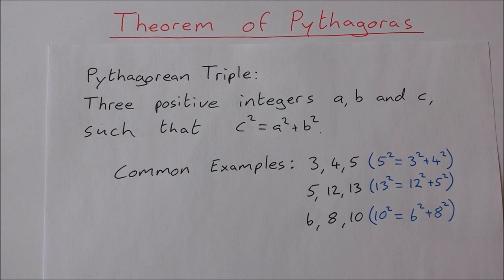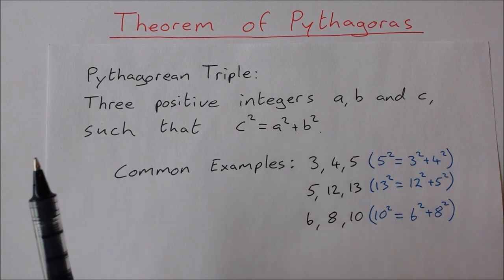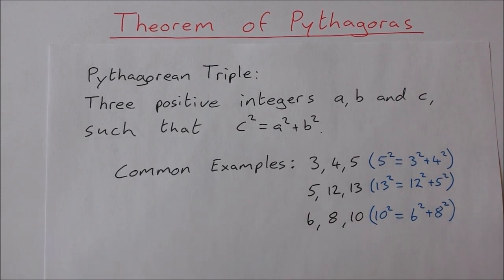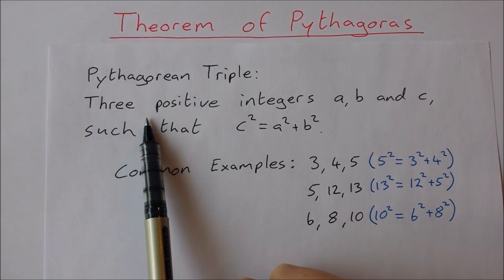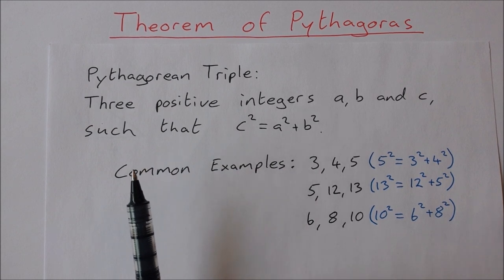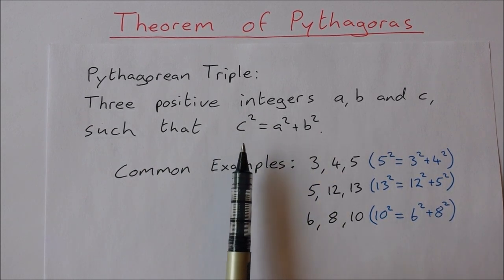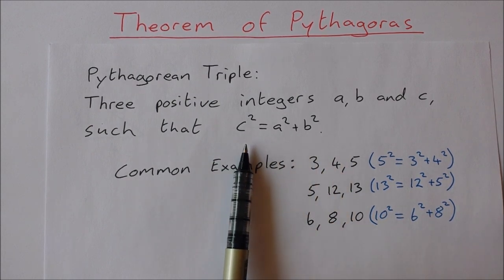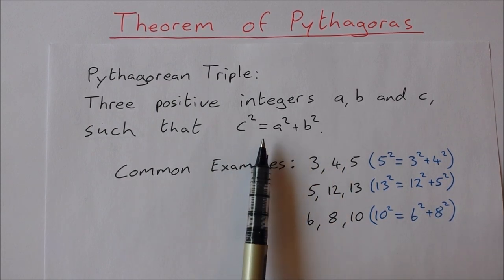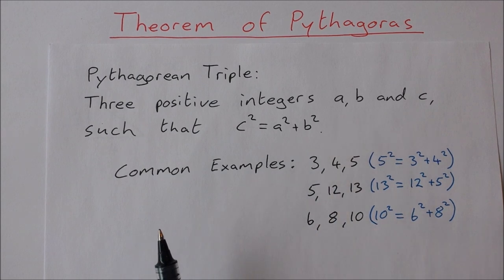Now before we get into a few problems, I want to remind you of a definition of a Pythagorean triple. So a Pythagorean triple is three positive integers a, b, and c such that c squared is equal to a squared plus b squared. So this here you'll recognize as the theorem of Pythagoras where one number squared is equal to the sum of two other numbers squared.